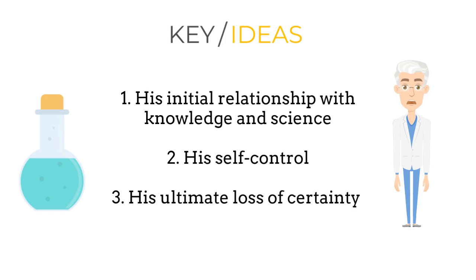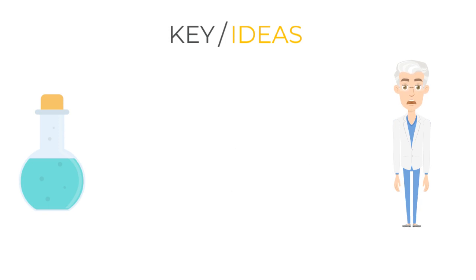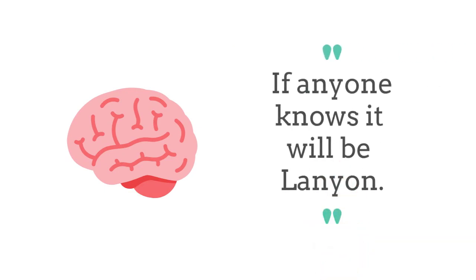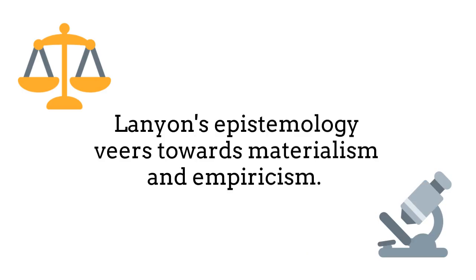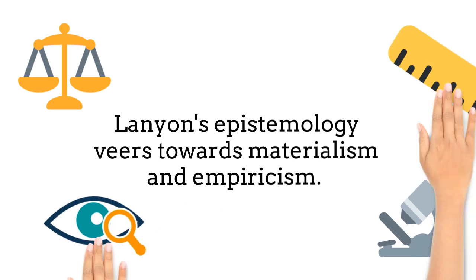Firstly, let's consider Lanyon's initial relationship with knowledge and science. From our immediate introduction to the character, Lanyon is associated with certainty of knowledge. If anyone knows, it will be Lanyon, as Utterson says. Lanyon's epistemology, which means his theory of what constitutes knowledge, veers towards materialism and empiricism - views that physical matter is the only reality and that the only truth of the world comes from what we can measure and observe.